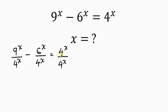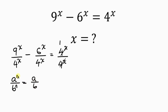On the right-hand side, 4 to the x divided by 4 to the x is 1. On the left-hand side, we apply the property of indices that says when I have a to the n divided by b to the n, this is the same as a over b to the n, since the exponents are the same, we combine the bases.